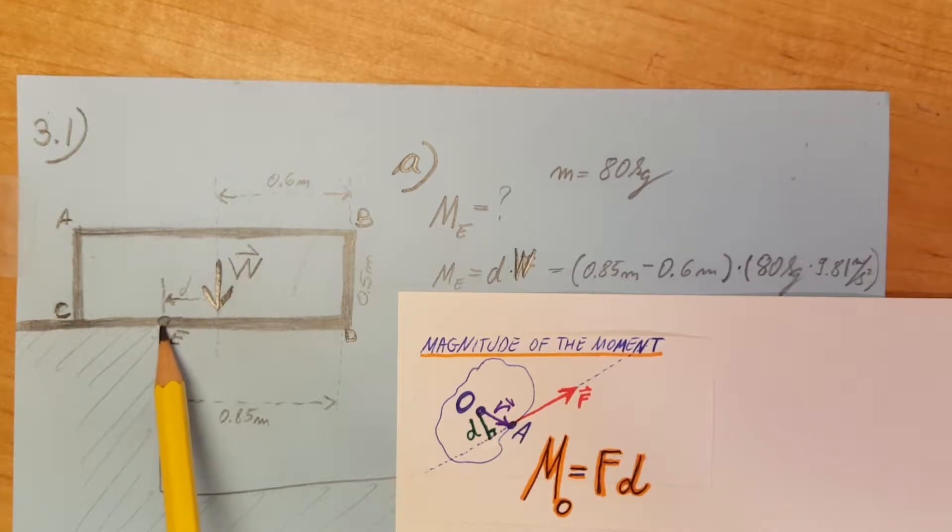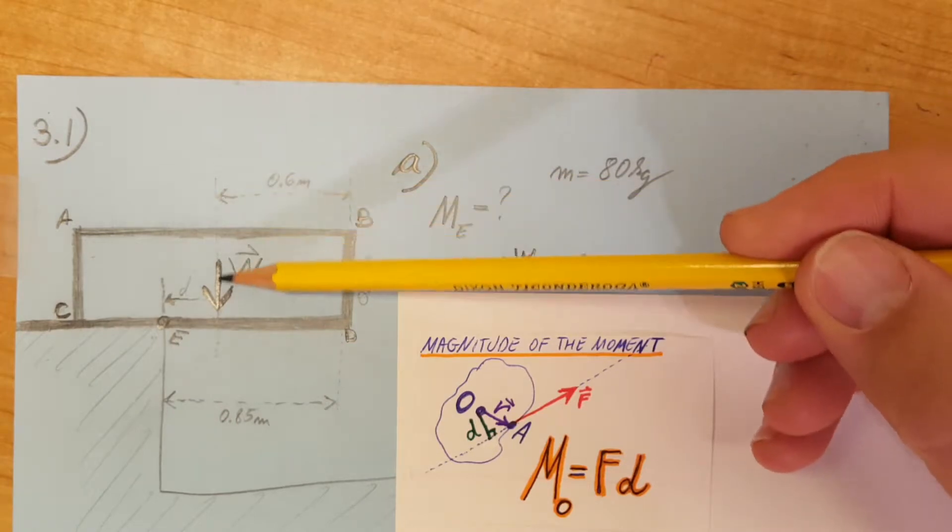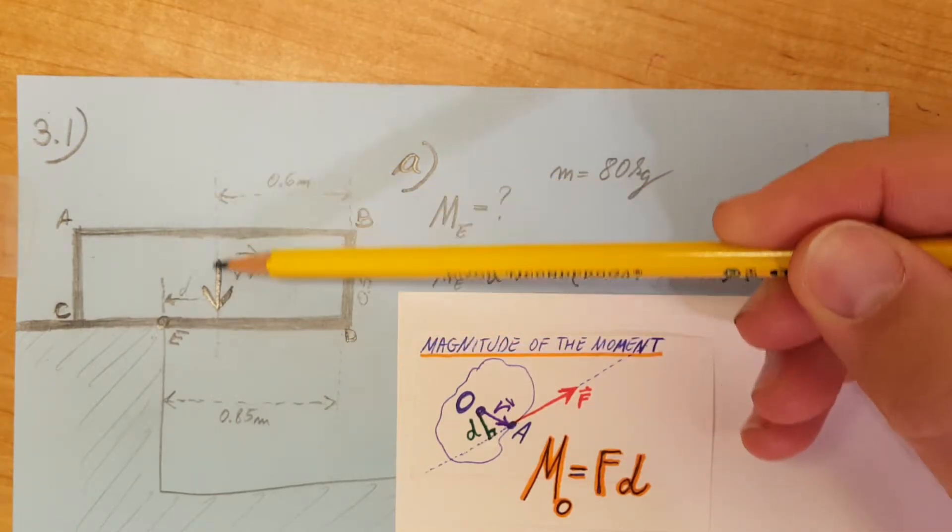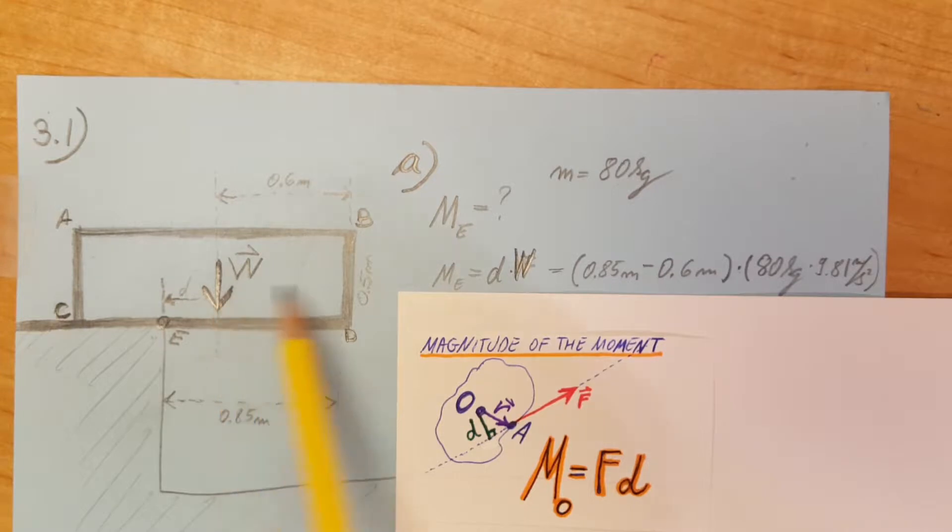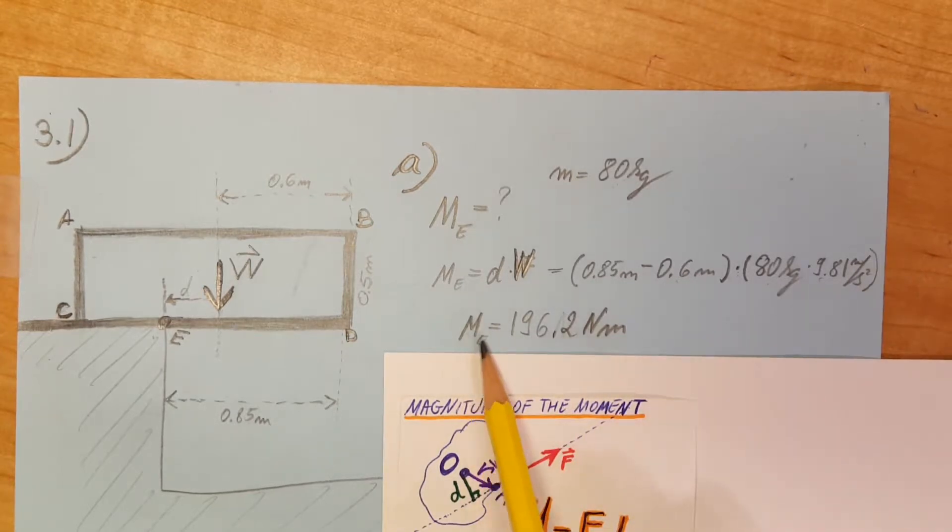This is the line of action of the force, so our d will be this. d times W, we're going to plug in. We have the d we can calculate from 0.85 minus 0.6 right here, times the W which is 80 kilograms times 9.81 meters per second squared. And the calculator will give us the moment about this point to be 196.2 newton meters.